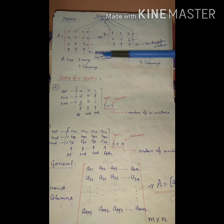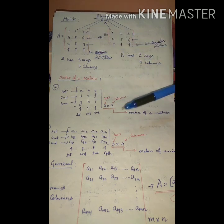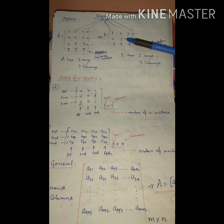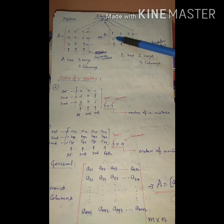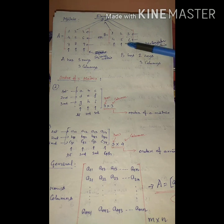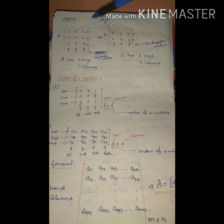Now let's take another example. Matrix B contains 1, 2, 3, 4, 5, 6. Here there are 2 rows but 3 columns, so the number of rows and number of columns are not the same. This type of matrix is known as a rectangular matrix.